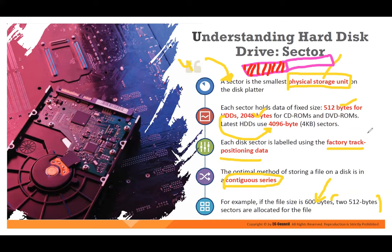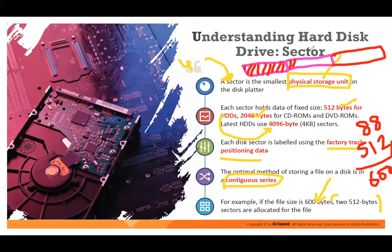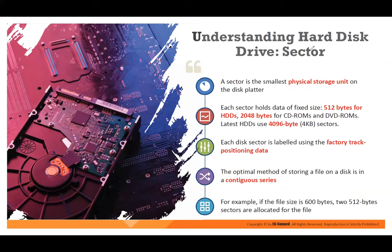So 600 minus 512 leaves 88 bytes remaining. The remaining 88 bytes will be stored in sector two. When you have another piece of data, it will start from where the previous one ended. That is how data is stored. We are going step by step to make sure you understand how data is stored. Please be interactive in the chat box so we know you are following.